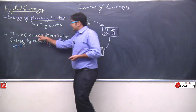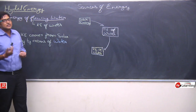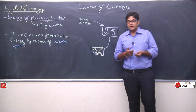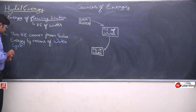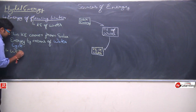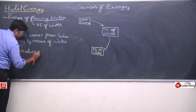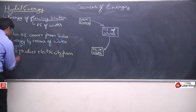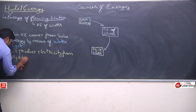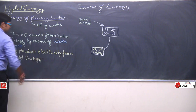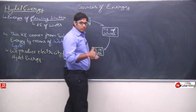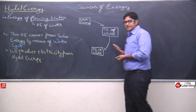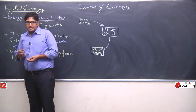अब यह जो kinetic energy water की है, इसे हम किस तरह से use कर सकते हैं? Electricity produce करना एक बहुत ही important aim होता है, तो इसीलिए इस hydel energy की मदद से we produce electricity from hydel energy। इसके लिए आपने एक turbine को घुमाया, उस turbine से एक generator connect कर दिया — जैसे ही वो turbine घूमेगा वैसे ही generator भी घूमेगा और generator electricity बना के आपको देगा।